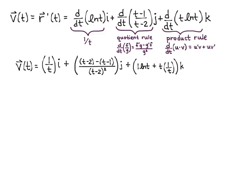Now let's simplify a little bit. So I have 1 over t, and the j term is going to simplify to negative 1 over the quantity t minus 2 quantity squared j, plus natural log of t plus 1 times k. There's my velocity.